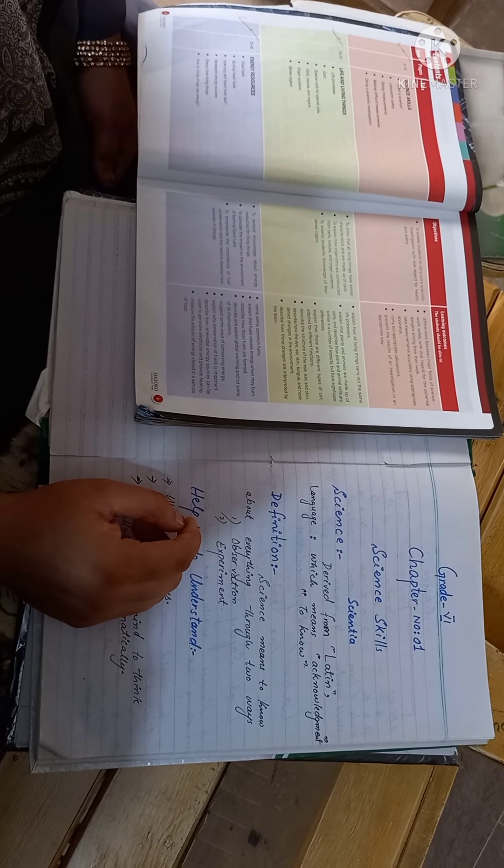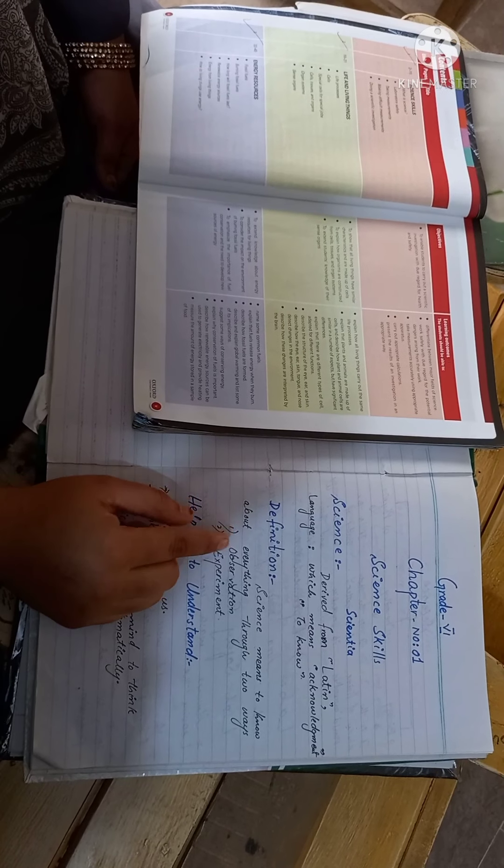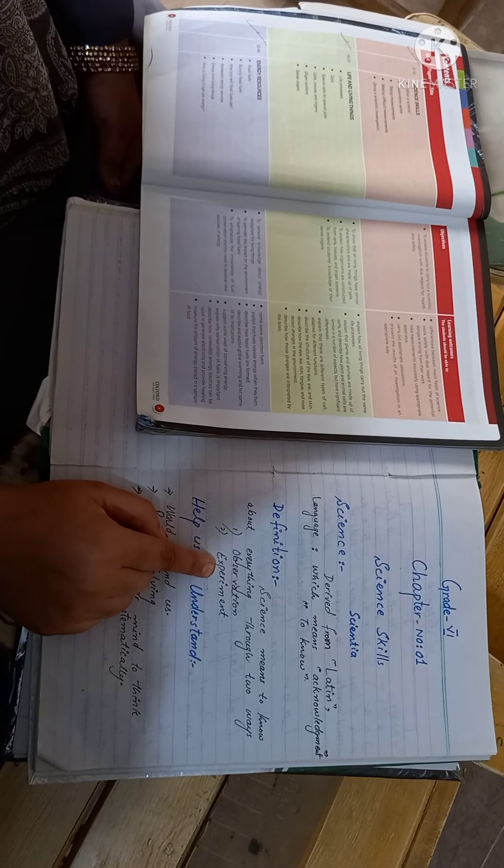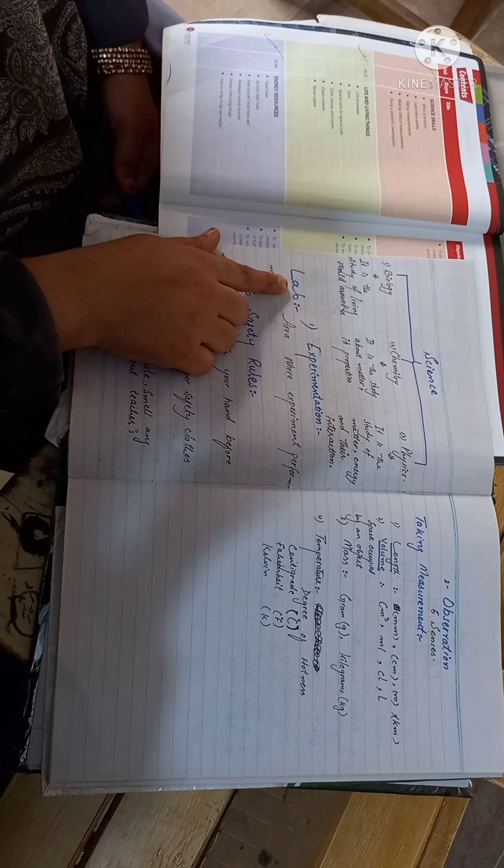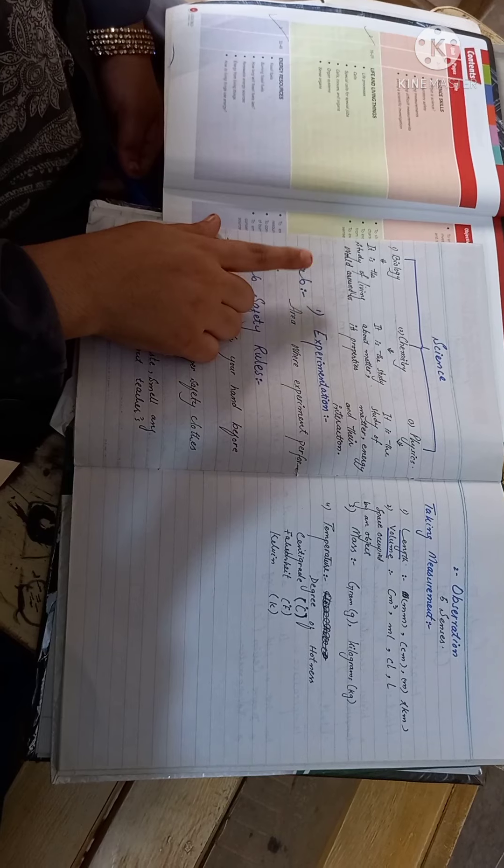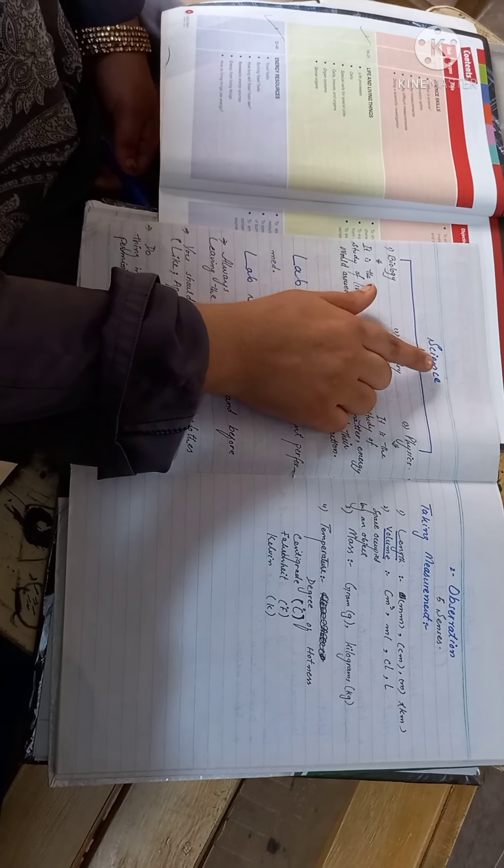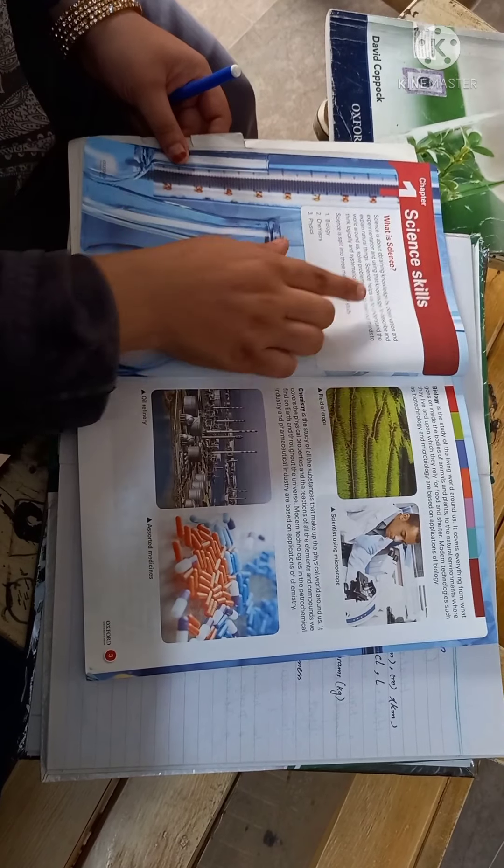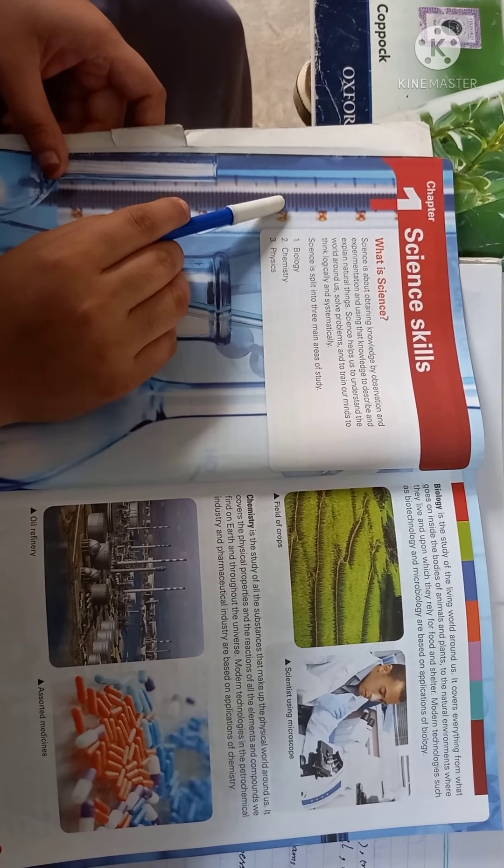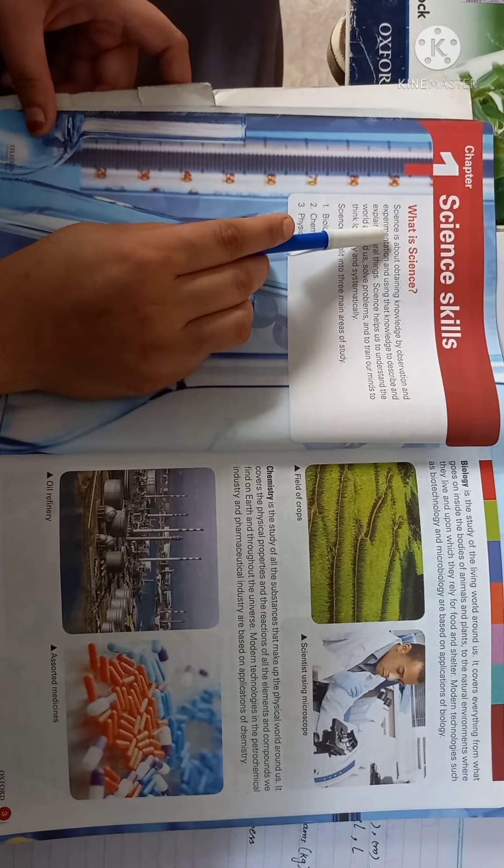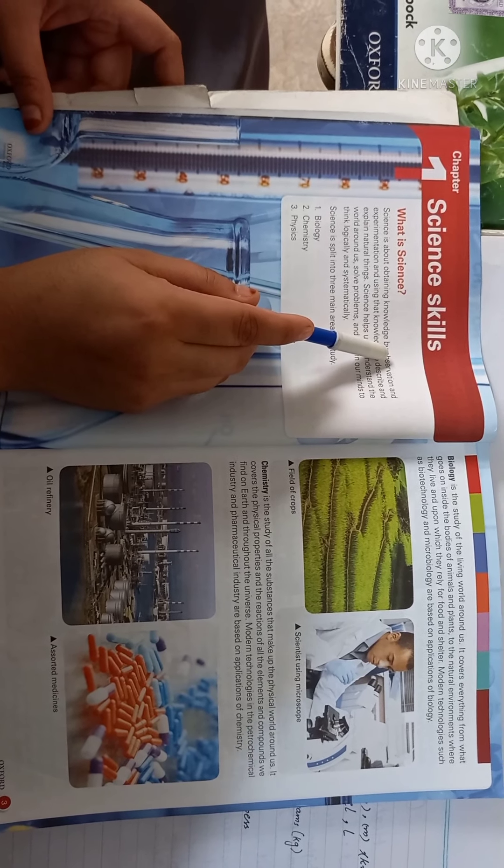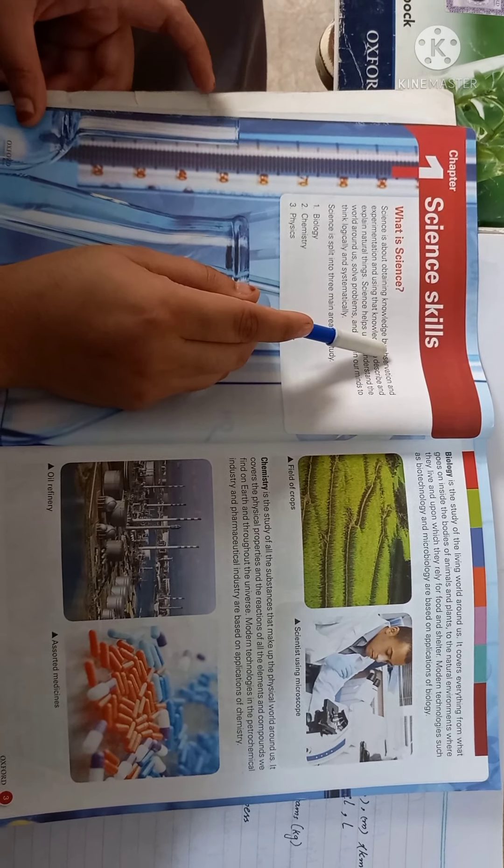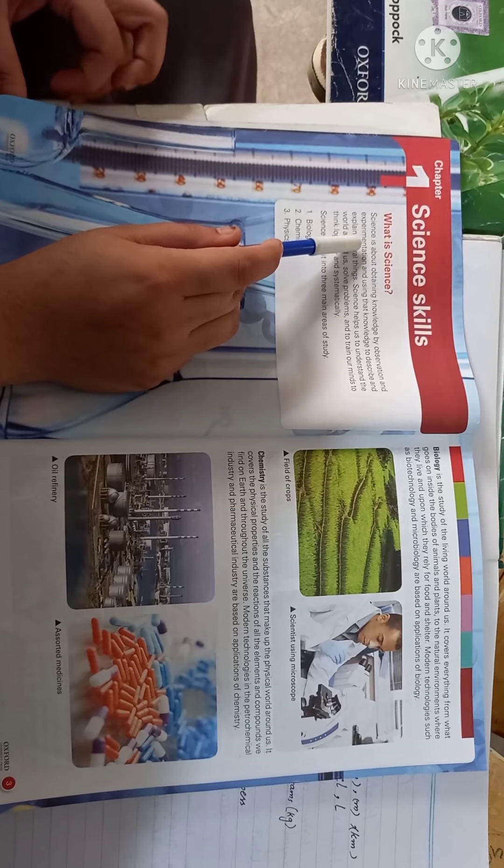Observation is the first step. The second step is the experiment. Experiment we do in lab. So, experiment in lab. This is the second topic. First, what is science? Science, the definition given is: science is about obtaining knowledge by observation and experimentation. As I told you that we can understand the two steps. Observation, we understand through the five senses and observe things. And the second step is experimentation.